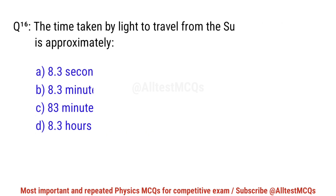Question No. 16. The time taken by light to travel from the sun to earth is approximately? Right option is B. 8.3 minutes.